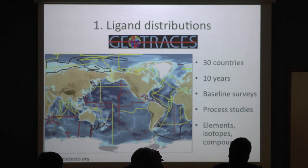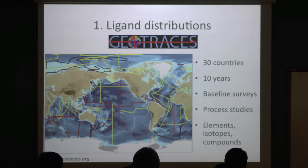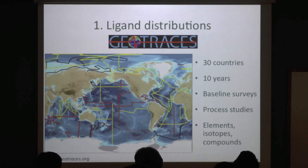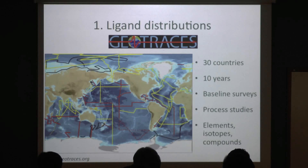Part of the funding in my lab comes from the GeoTraces program — a global ocean survey of trace elements and isotopes. It's the first attempt at characterizing dissolved iron concentrations across the ocean basins. We've long known iron was incredibly important, but sampling is difficult because of rusty ships and copper-based anti-fouling paint. We needed really specialized equipment, largely involving Kevlar and Teflon, which are relatively recent additions to our sampling tool set.